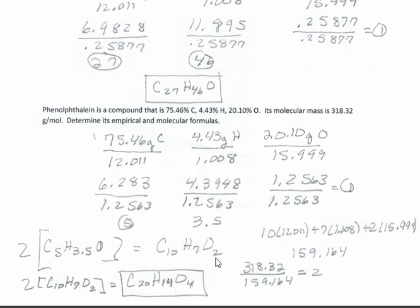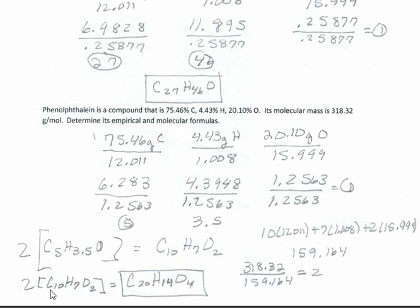This problem also asks for the molecular formula, since the molar molecular mass is given as 318.32 g/mol. Find the mass of the empirical formula C₁₀H₇O₂: (10 × 12.011) + (7 × 1.008) + (2 × 15.999) = 159.164 g/mol. Divide the molecular mass by the empirical mass: 318.32 ÷ 159.164 = 2. The molecule is twice as large as its empirical formula. Multiply C₁₀H₇O₂ by 2 to get the molecular formula: C₂₀H₁₄O₄.